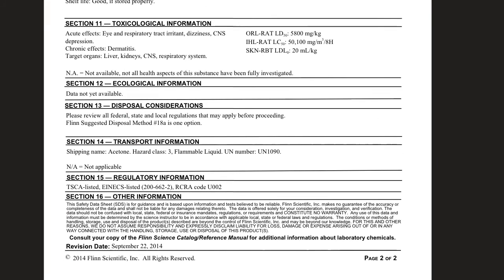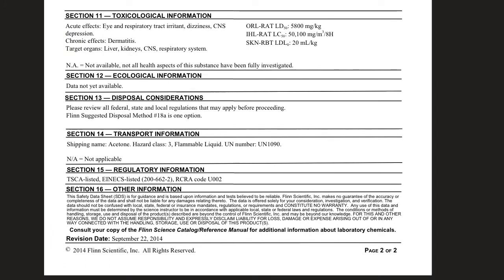Section twelve: ecological information — data not yet available, though I'm sure it's not good. Section thirteen: disposal considerations — review your local and state guidelines for how they want you to get rid of things. Section fourteen: transportation — if you're shipping acetone, label it as hazard class 3 flammable liquid. Section fifteen: regulatory information. Section sixteen: other information. The most important things we need are those top sections. So now we've gone through an SDS — I'm really hoping that when you attempt your assignment of finding these things in the SDS sheet, it'll be a breeze. That's all I have for SDS. Hope that helped, bye y'all!